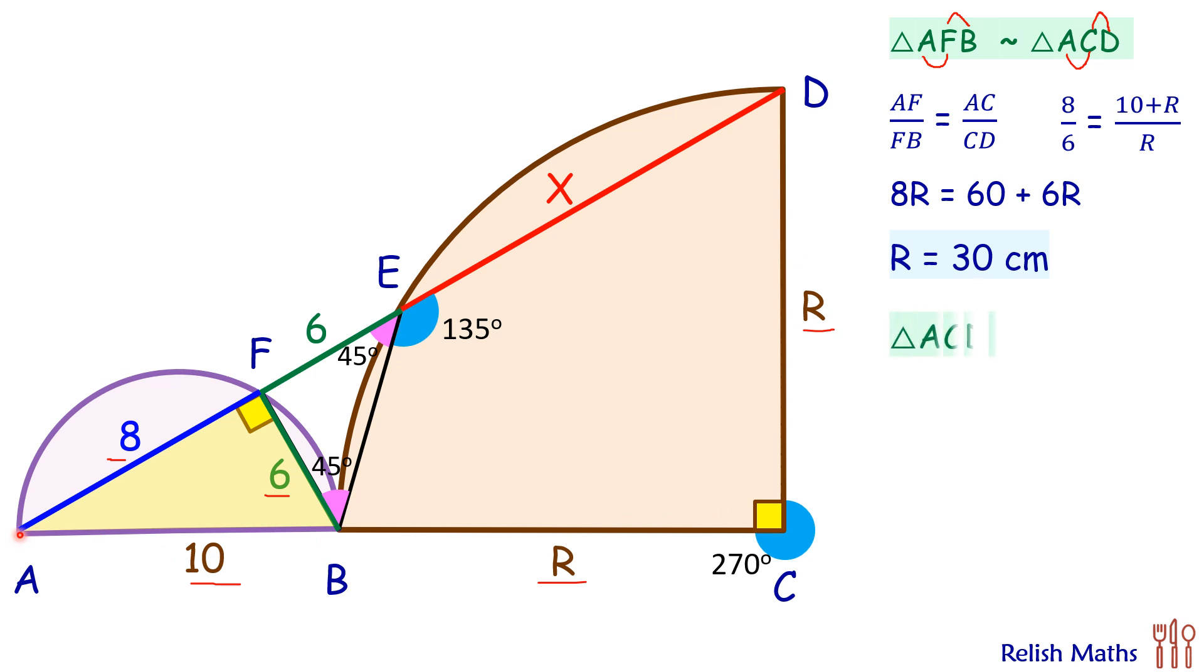Now let's look at the right angle triangle ACD. Here, applying Pythagoras theorem, we'll get AD squared is nothing but CD squared plus AC squared. Putting the values, AD is nothing but 8 plus 6 plus x, that is 14 plus x. CD is r, which is 30 centimeters. AC is 10 plus r, which is 40 centimeters.